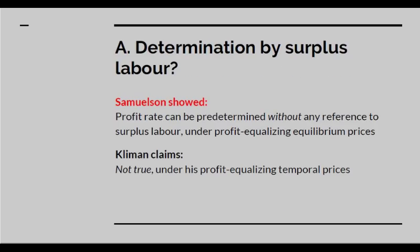Now let's go through his claims one by one. Determination by surplus labour — why is he talking about this? He's directing it at Samuelson, who had previously shown that the profit rate can be predetermined without any reference to surplus labour if you assume profit-equalising prices. Kliman claims that this isn't true under his profit-equalising temporal prices. So let's try simulating it and see what happens.